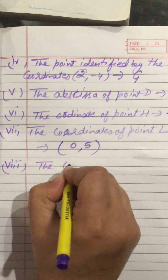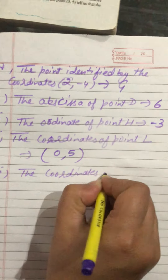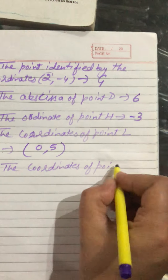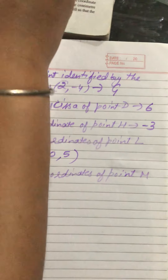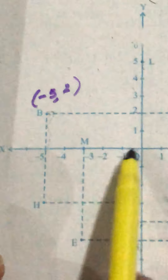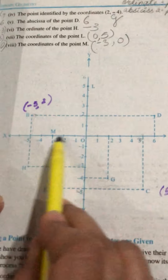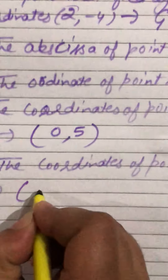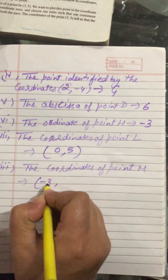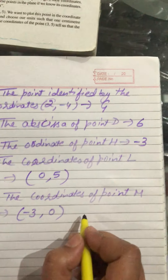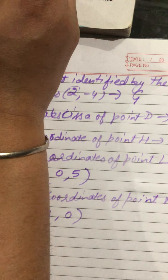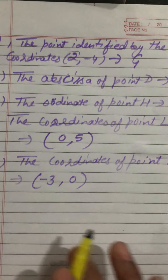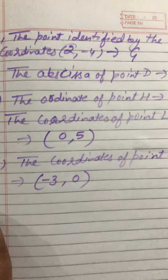The eighth part asks for the coordinates of point M. You can see M lies on the x-axis. On the x-axis, the y-coordinate is always 0, and M lies at minus 3. So the coordinates of M are (−3, 0). This completes exercise 3.2 — now you complete it. Thank you.